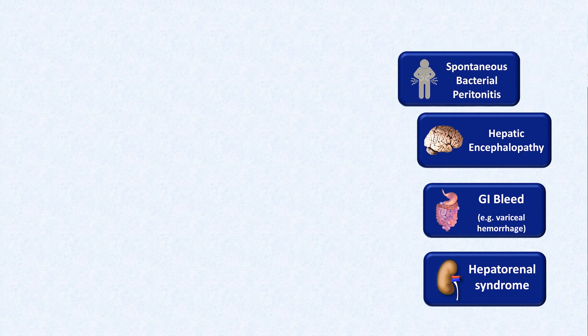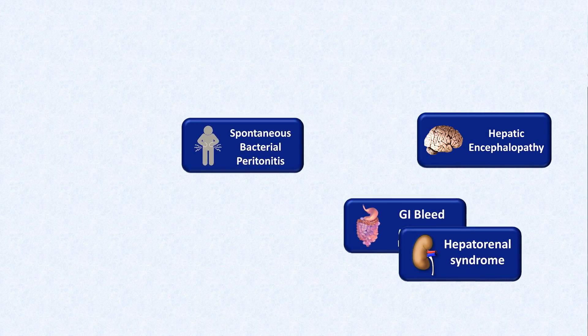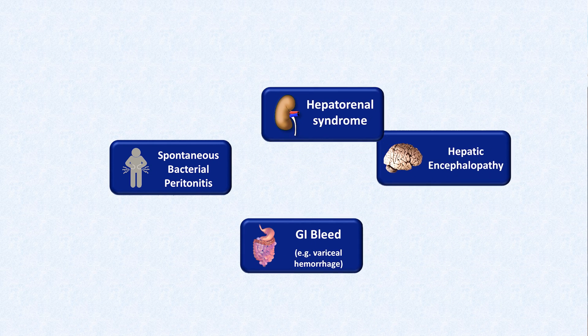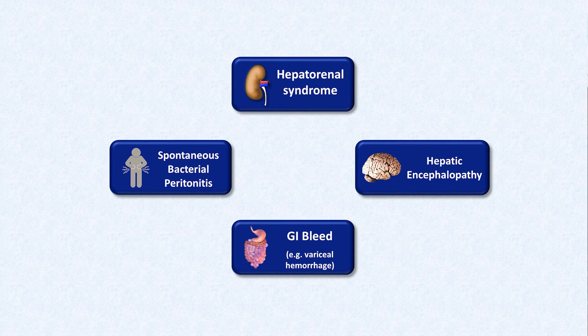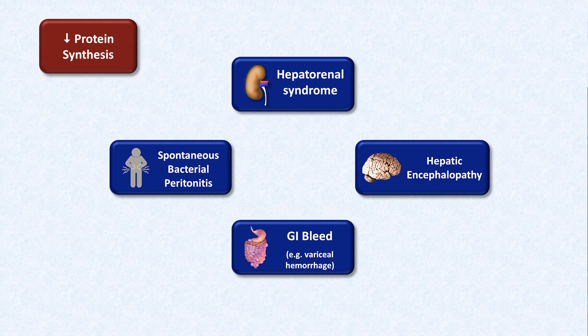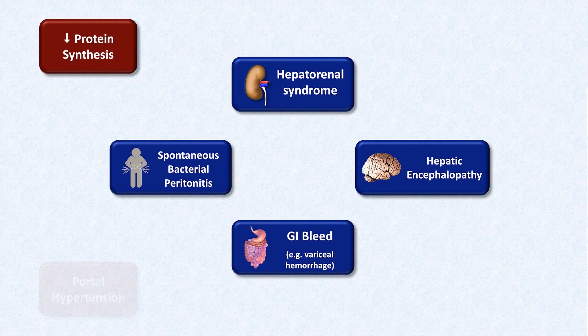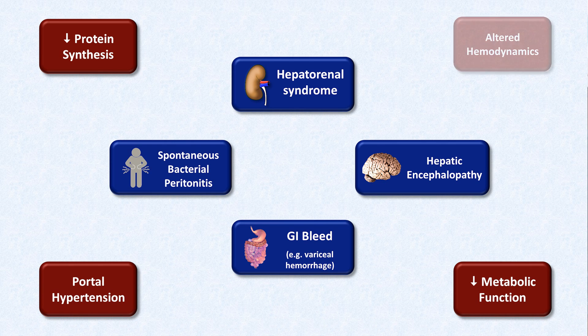Just as we have four acute complications, there are four particularly notable pathophysiologic consequences of liver disease. Liver disease, when severe, leads to decreased protein synthesis, portal hypertension, decreased metabolic function, and altered hemodynamics — meaning splanchnic vasodilation leading to decreased peripheral vascular resistance, which usually leads to a compensatory increase in heart rate and cardiac output.